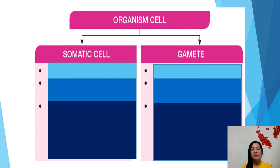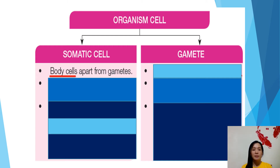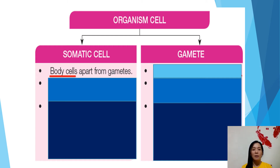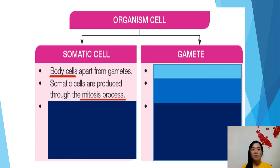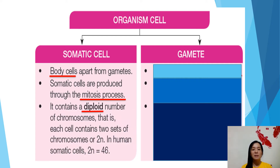Somatic cells are the body cells apart from gametes. The somatic cells are produced through the mitosis process. They contain a diploid number of chromosomes. Inside the somatic cell, it contains a diploid number of chromosomes. Diploid means that in each cell there are two sets of chromosomes. For example, in humans the somatic cell 2n equals 46.